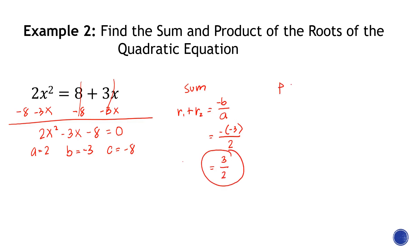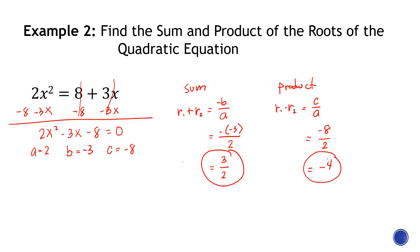For the product of the roots, r1 × r2 = c/a. Our c is negative 8 and our a is positive 2, so negative 8 over 2 equals negative 4. So that's the sum and the product for this example.